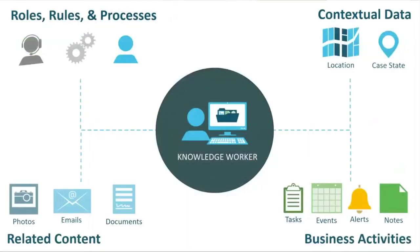When you look at WorkView by itself, it is essentially the right-hand side of the screen — the contextual data, what's the location, who is this case, who's involved in the process. The lower right-hand side is the business activities: those tasks, notes, and notifications we can send out automatically, and even a calendar-type view we can build within an application. Over on the left-hand side is really what we've been doing for 25 years: workflow and document management, the roles, rules, processes, and related content. The power comes from putting all of this together in a single solution.